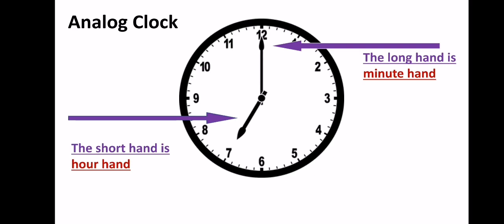Today we're going to talk about clock. The clock that you are seeing right now in front of you is called analog clock. The analog clock has two hands.